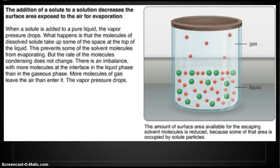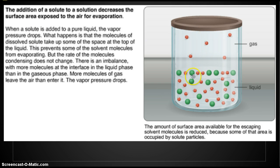The addition of a solute to a solution decreases the surface area exposed to air for evaporation. With no solute, all water molecules can evaporate freely. With solute present, those molecules get in the way — some molecules bounce off instead of escaping. When a solute is added, the vapor pressure drops because dissolved solute molecules take up space at the top of the liquid, preventing some solvent molecules from evaporating. But the rate of condensation does not change, so now perhaps only two molecules per minute turn to gas while five per minute turn back to liquid — there is an imbalance with more molecules entering the liquid phase than the gaseous phase.